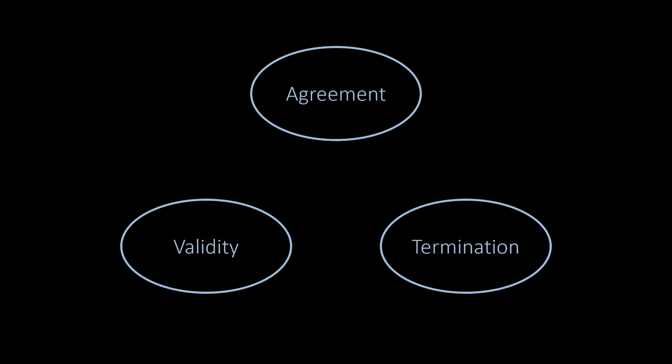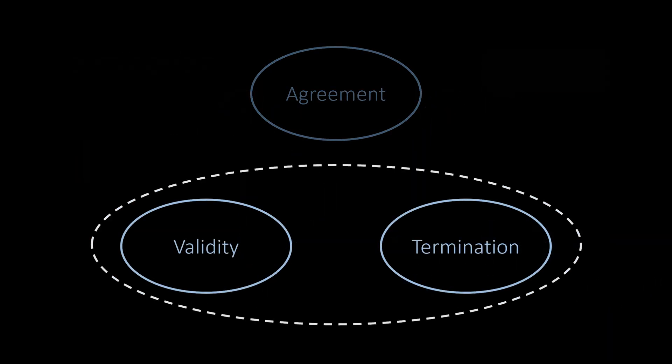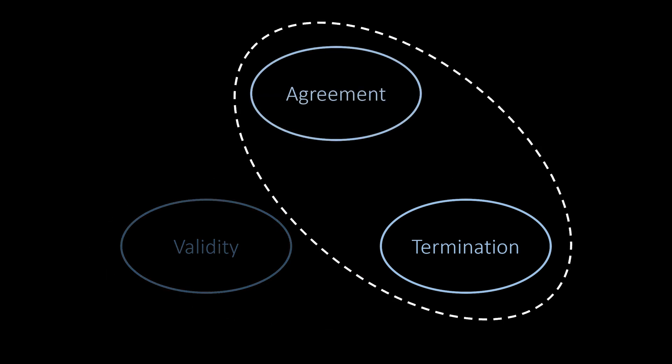Note that satisfying any two of the three properties is not hard. If we drop the agreement property, each node can simply decide on its initial value. If we drop the validity property, each node can simply decide on a fixed value, for example zero. Clearly, such a protocol is neither interesting nor useful.